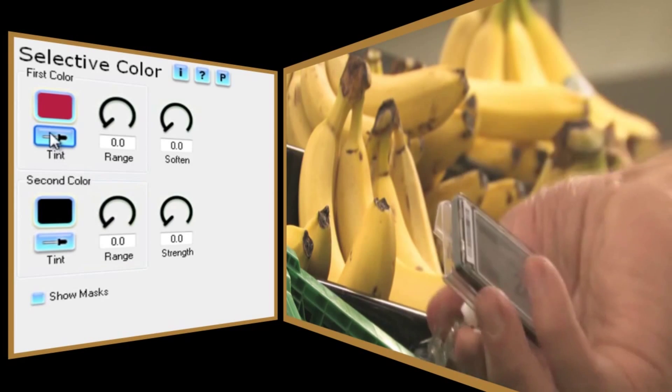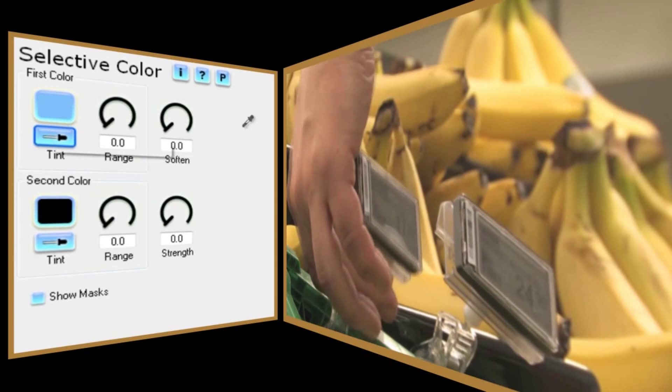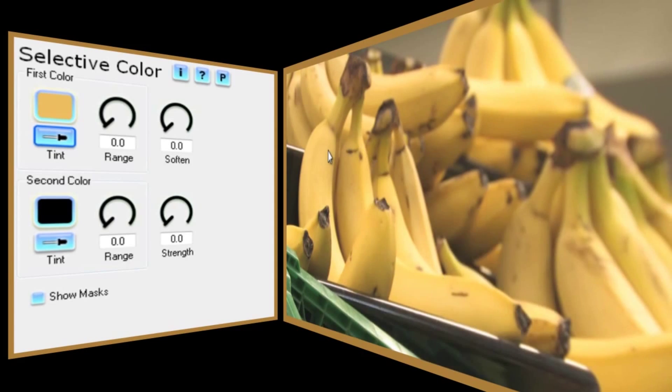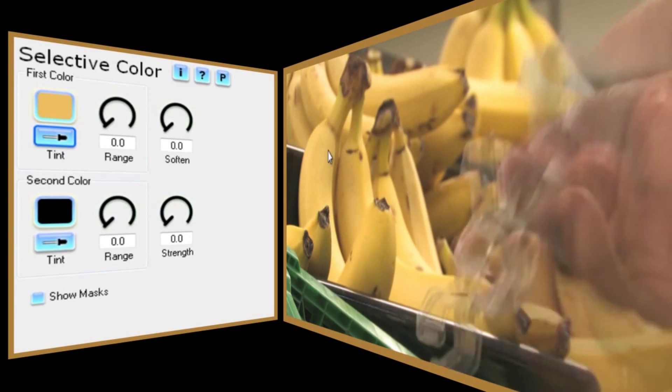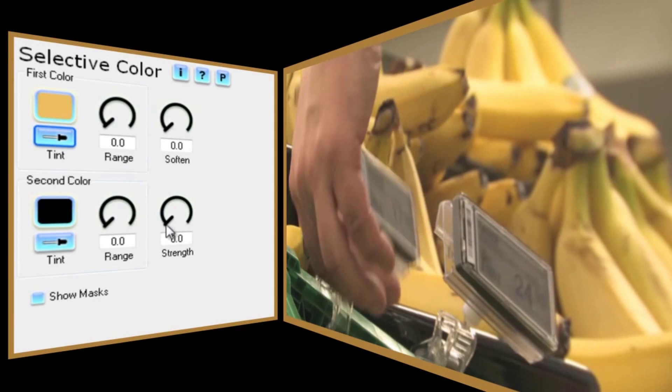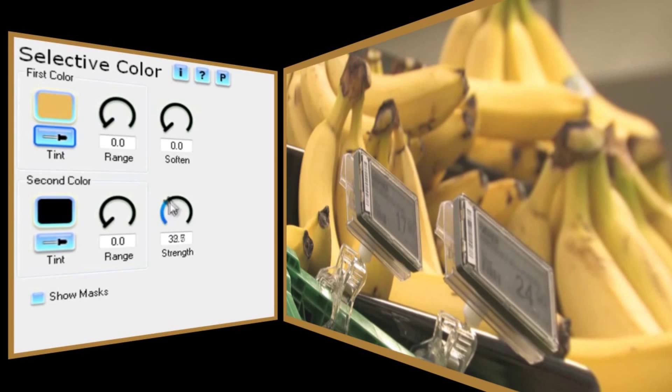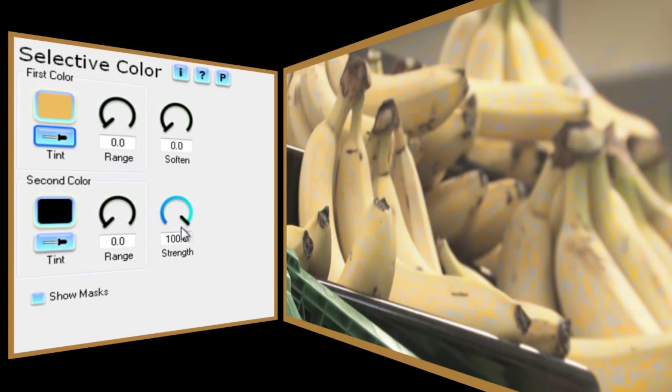So let's get started by selecting our first color, quite obvious which color it's going to be. You'll notice it's had no effect yet and that's because I haven't adjusted the Strength control. If I do that now and turn it full on, you can see the result straight away.